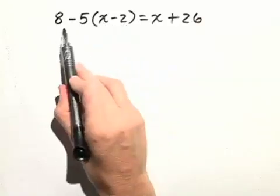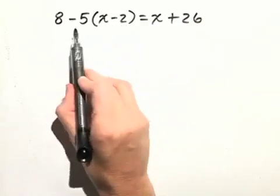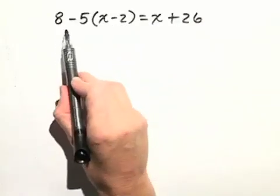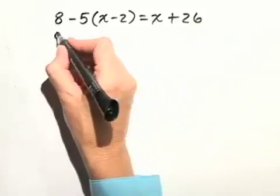So we actually need to distribute the negative 5 through the parentheses. Now don't be tempted to subtract 5 from 8, because that would not follow our order of operations. So let's leave the 8 alone. We have 8.